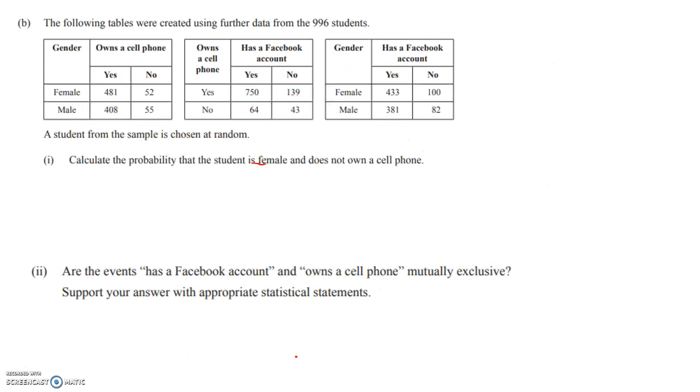All right, now we've got a change of information. We've got three tables. And now we're looking at cell phone ownership and whether students have Facebook or not. The first question we're asked here is a really easy one, which is to figure out the probability that the student is female and doesn't have a cell phone.